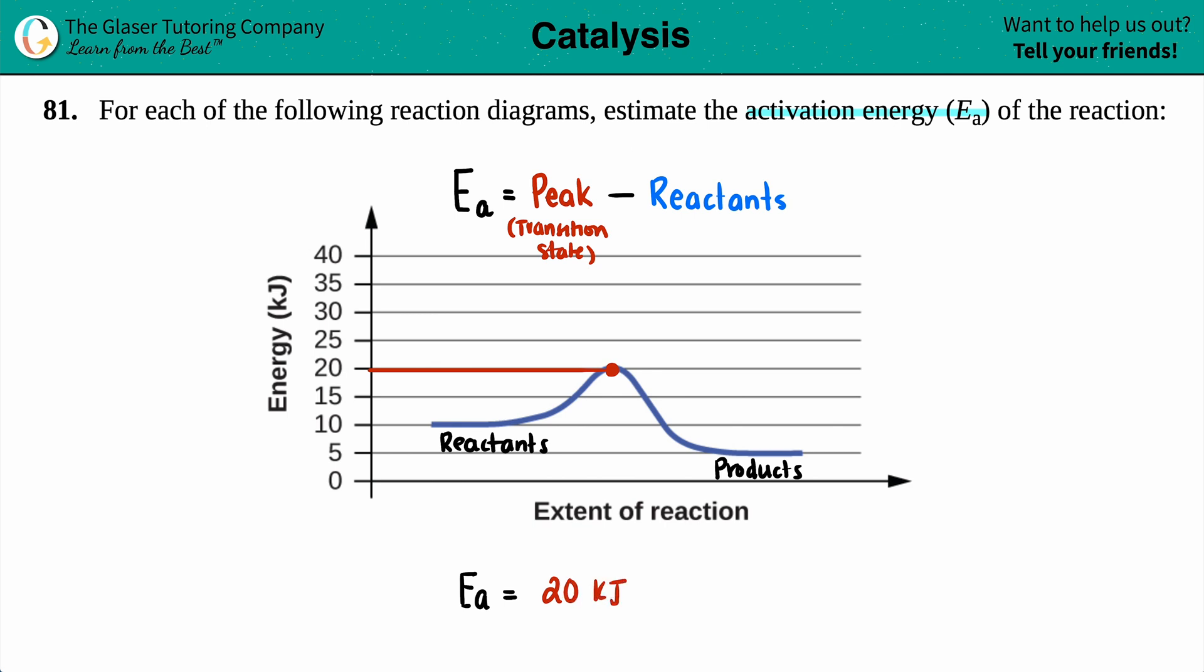So in our case our activation energy is going to equal the 20 kilojoules that the transition state or that peak has minus the reactants. The reactants are always the straight horizontal line and from here seems like it's at 10 kilojoules.